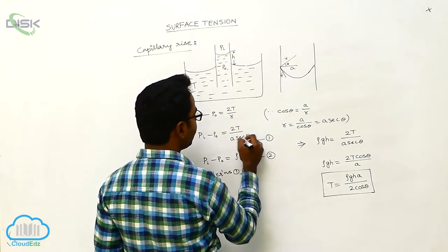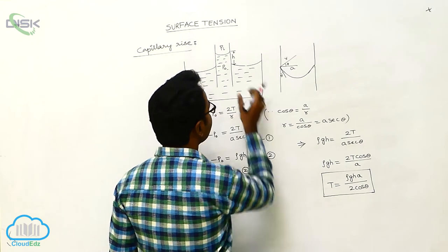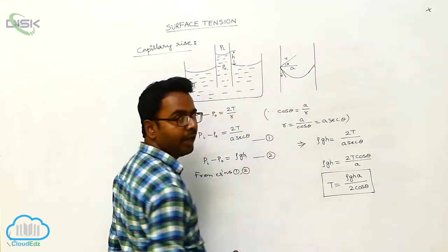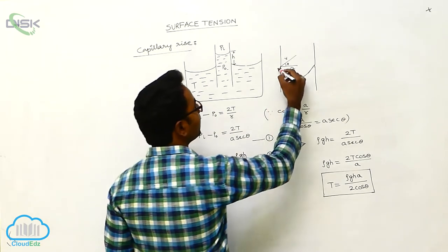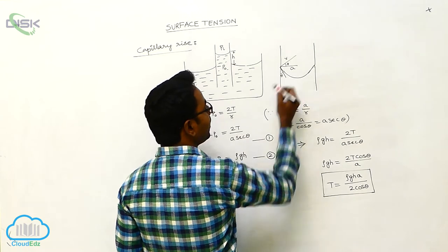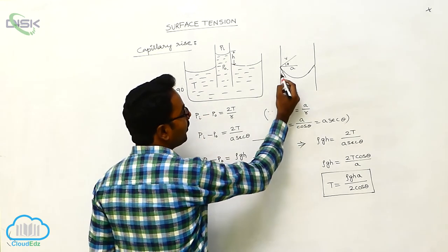We can also write R is equal to A sec theta. How do you get this? When this is drawn big, you can see that A is the radius of the capillary tube and R is the radius of the air bubble, and theta is the angle of contact. If this angle is theta, it is also theta.